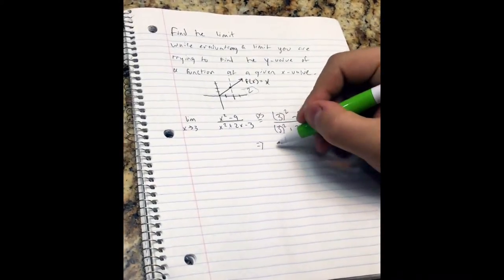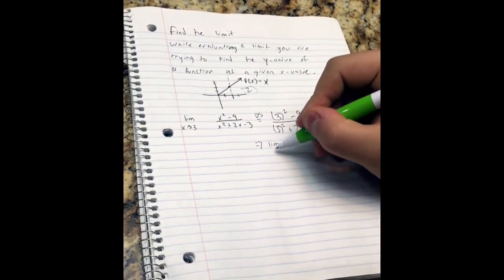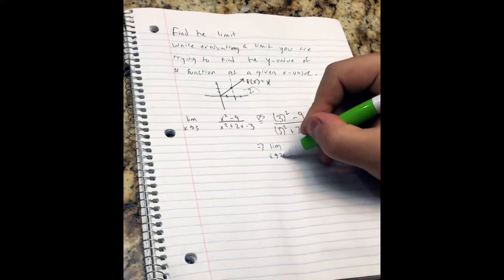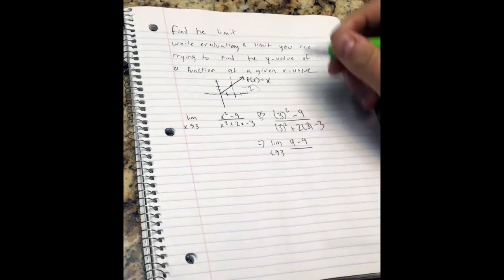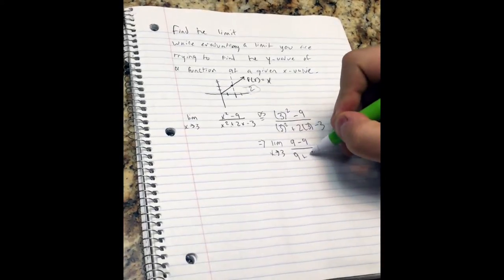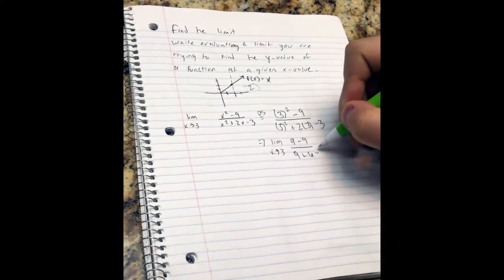This would equal the limit as x approaches 3 of 9 minus 9 over 9 plus 6 minus 3.